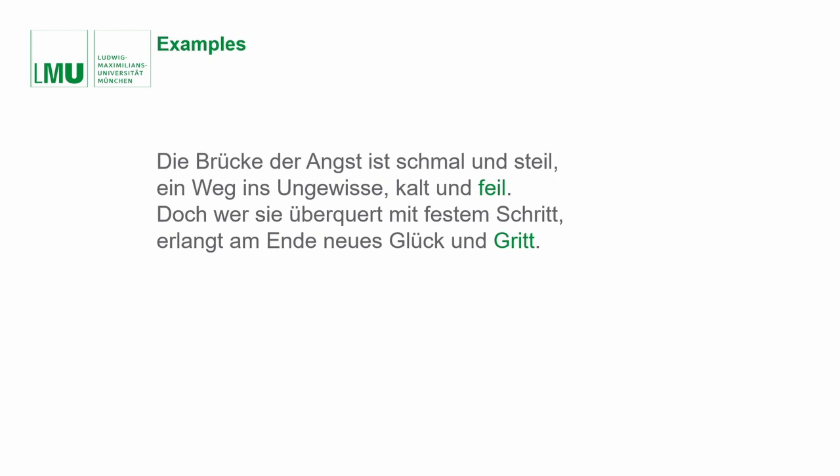ChatGPT's poem appears rather clear than ambiguous — recognizable, for example, by a very superficial object description of a bridge. The used terms are simply narrow, steep, and cold. Some words seem used purely for rhyming purposes with no connection to the content. For example, the word 'feil,' which is very unconventionalized and can mean 'for sale,' breaks out of the series of preceding adjectives. The word 'Grit' only occurs in German as a first name — also unconventionalized. ChatGPT describes it, or her, as something to be attained when one has overcome the bridge of fear, making overcoming fear as a metaphor for venal love the only conceivable interpretive approach.